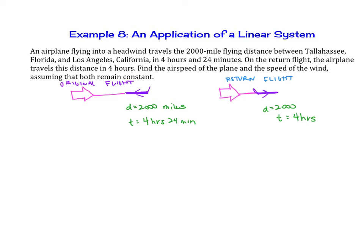R1 will be the airspeed of the plane, and R2 will be the speed of the wind.